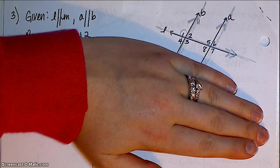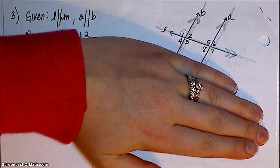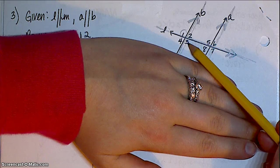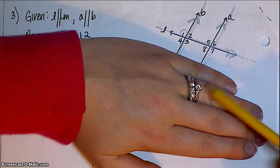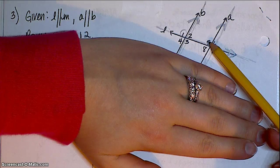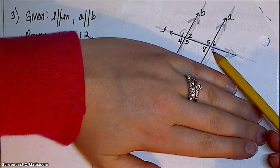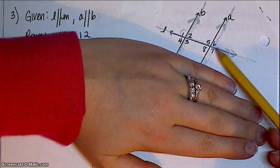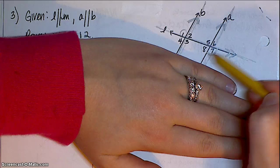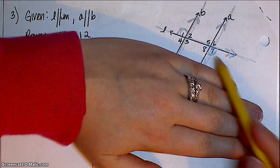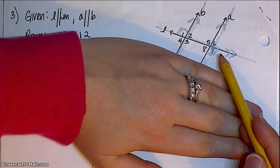What other angles are the same as angle 1? Well, 3, because it's vertical, that might not help us too much. 5 is corresponding, or you could say 7 is alternate exterior. I'm going to go with 7, lucky number 7. So I'm going to say 1 and 7 are the same, because they're alternate exterior angles.